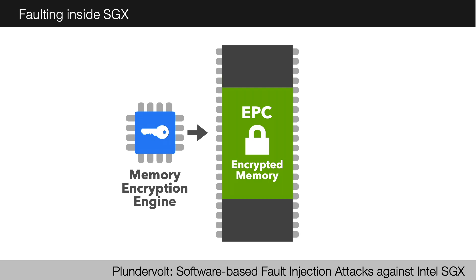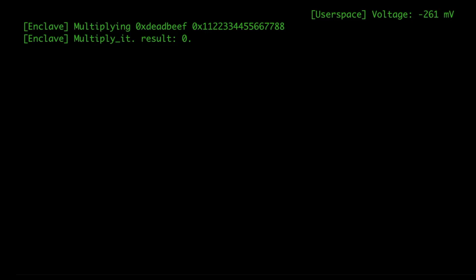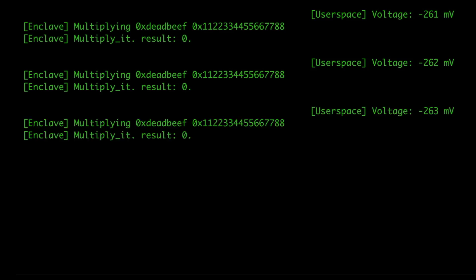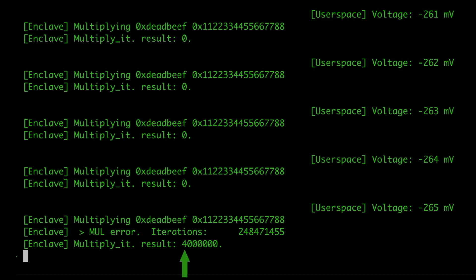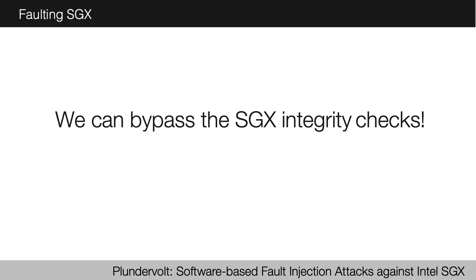So what happens if we have bit flips in the EPC? The integrity check fails and it locks up the memory controller. Rowhammer doesn't work inside SGX because the integrity check fails. But what we discovered is that the voltage and frequency is changing on the CPU core even when something is running inside SGX's trusted code. So let's look at what happens if we try to fault inside SGX whilst undervolting in user space. The right-hand side is user space, and the left-hand side is enclave SGX multiplications. And as you can see, we've got a fault — the same fault we had in user space. We can bypass the SGX integrity check by inducing a fault whilst SGX is running computations.